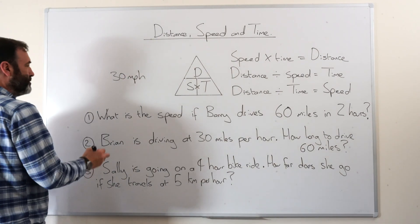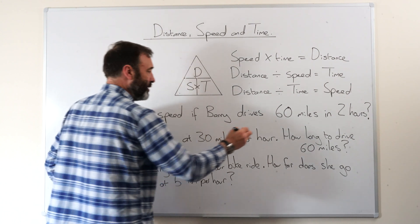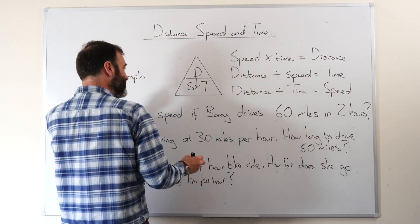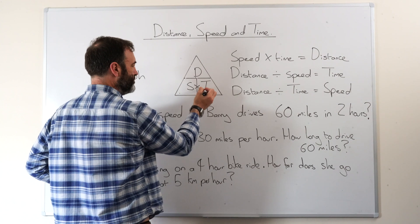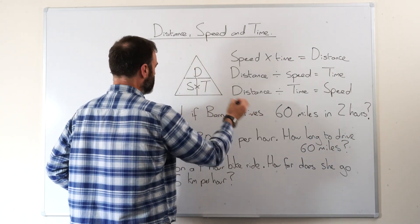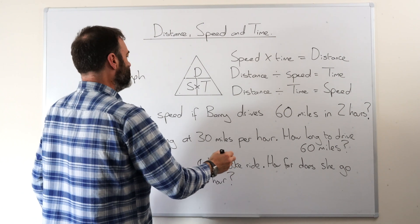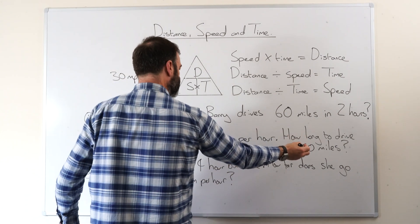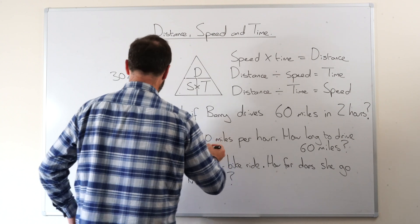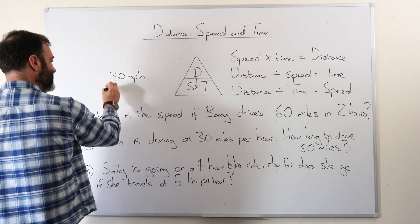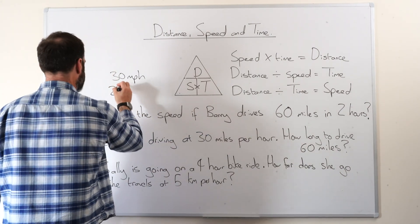Next one. Brian is driving 30 miles an hour. So we know we've got speed. How long does it take to go 60 miles? So we want time. Because we want how long. So we do distance divided by speed should give us this. So the distance is 60 divided by the speed, which is 30, gives us 2. And it is 2 hours because that's the unit using the question.